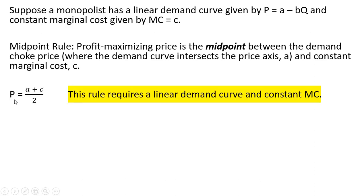Given that, the profit maximizing price P will equal (a + c)/2, the midpoint or average of those two values. This rule requires a linear demand curve and constant marginal cost curve, so the marginal cost will be horizontal in this case.